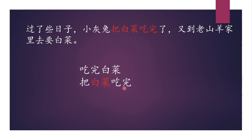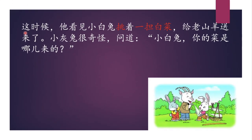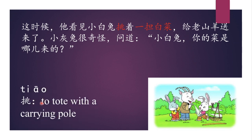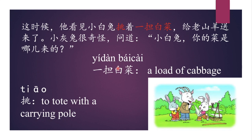這時候，他看見小白兔挑著一擔白菜給老山羊送來了。 挑 means to carry on a shoulder pole. 一擔白菜 means a load of cabbage. On the way, he saw the little white rabbit carrying a load of cabbage and giving it to the old goat.